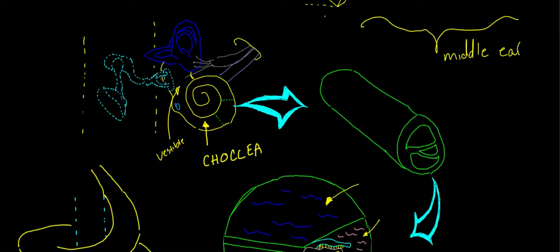And what happens is when these three bones vibrate, it sends sound or shockwaves into the cochlea. And these sound waves travel through the cochlea, which is the snail part.